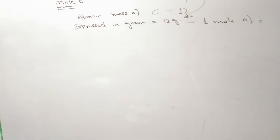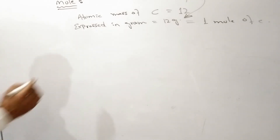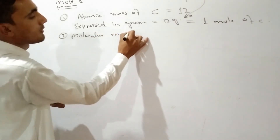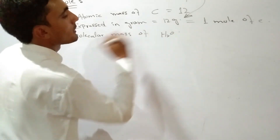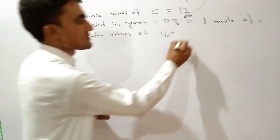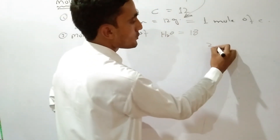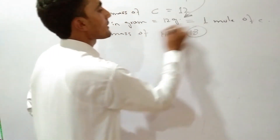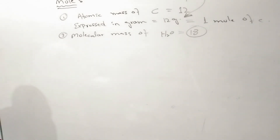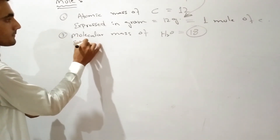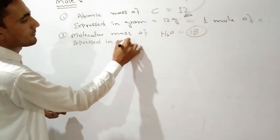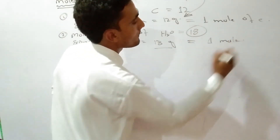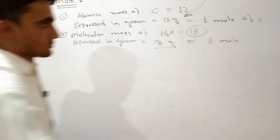The second example is molecular mass. The molecular mass of H2O is 18 — that is H2 (2) plus O (16) is equal to 18. So 18 grams is equal to 1 mole of H2O.